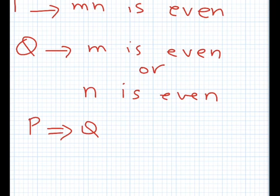One option is that m is even and n is odd. The other one is that m is odd and n is even. The third one is m and n both are even. So we have to check for three cases.